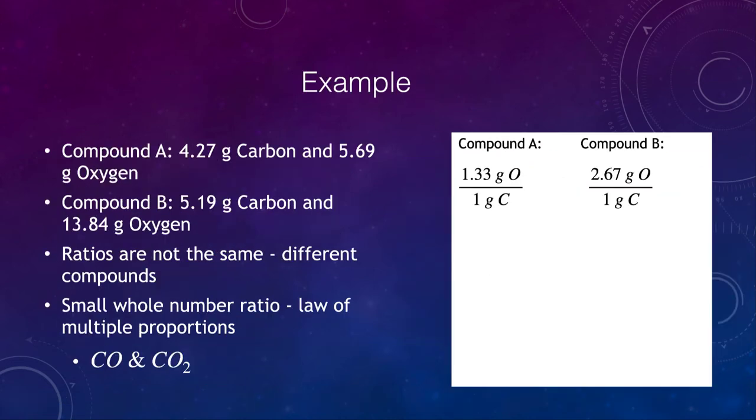Now, here's an example. Let's go ahead and look at another example of this. Compound A has 4.27 grams of carbon and 5.69 grams of oxygen. Compound B has 5.19 grams of carbon and 13.84 grams of oxygen. Now we can divide those. So compound A is 5.69 grams of oxygen and it has 4.27 grams of carbon. Now in compound B we have 13.84 grams of oxygen and 5.19 grams of carbon.